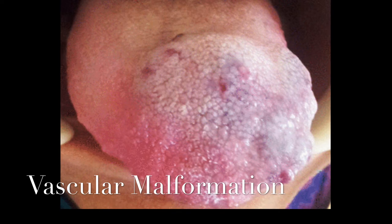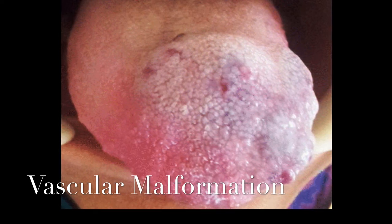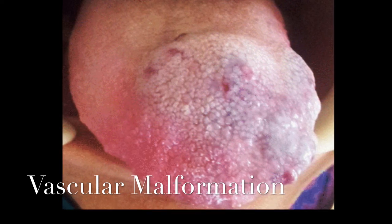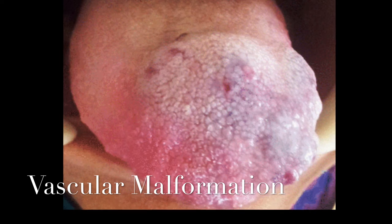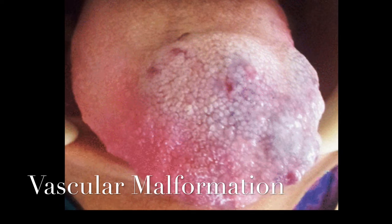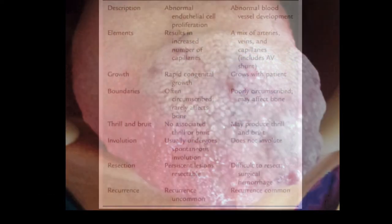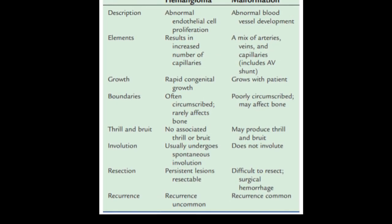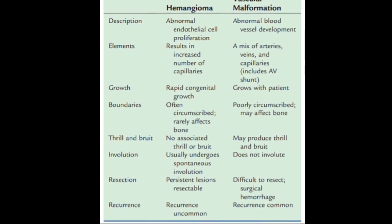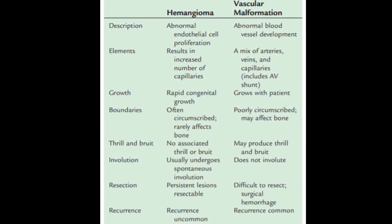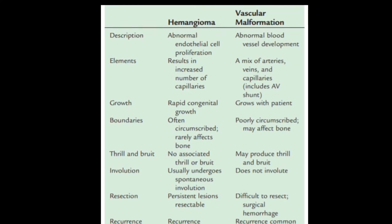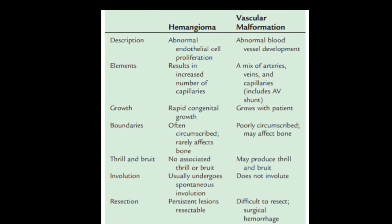This is a case of AV malformation, which is an abnormal communication between an artery and a vein. They are usually present since birth and are best diagnosed by CT angiogram. It is wise not to treat these kinds of patients in a clinical setup. These are some differences between hemangioma and vascular malformation. The most important difference is that hemangiomas tend to involute as the patient gets older, whereas most vascular malformations tend to grow along with the patient.